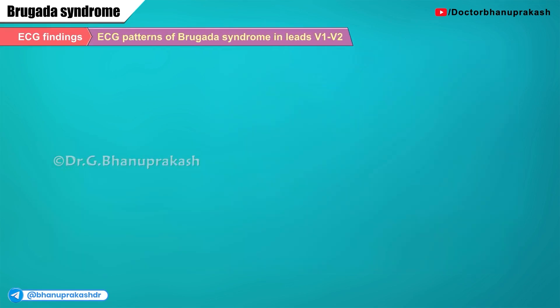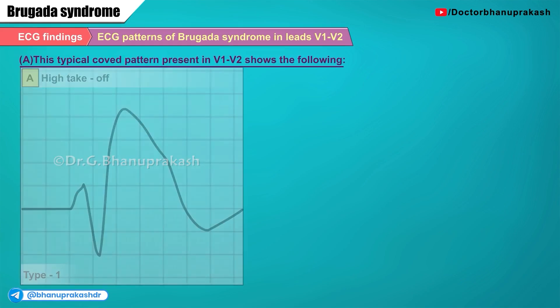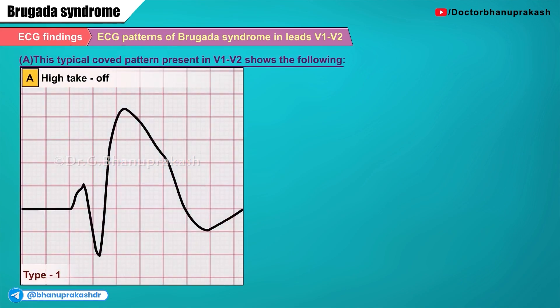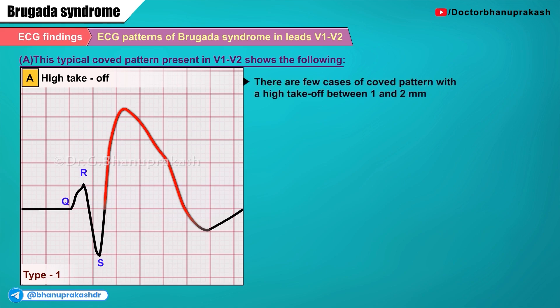The terminal portion of the ST is typically a curved pattern in leads V1 and V2. Panel A shows a typical curved pattern of type 1 Brugada syndrome seen in V1 and V2. At the end of the QRS, an ascending and quick slope with a high takeoff of at least 2 mm or more is followed by a sharp concave or rectilinear downsloping of the ST. There are few cases of curved pattern with a high takeoff between 1 and 2 mm, and there are no clear R prime waves.